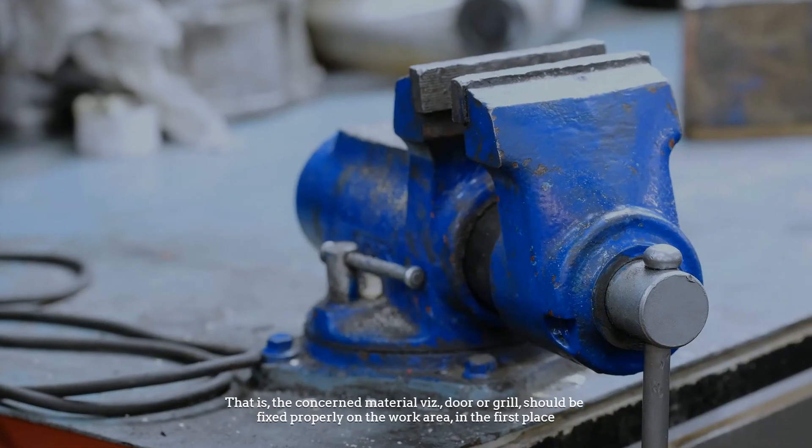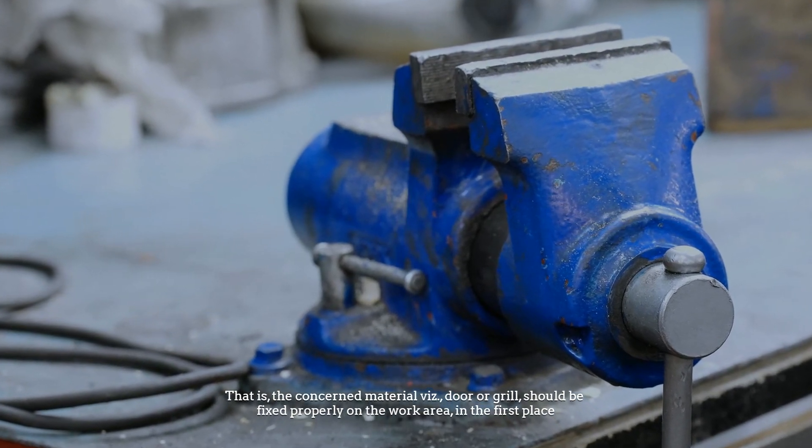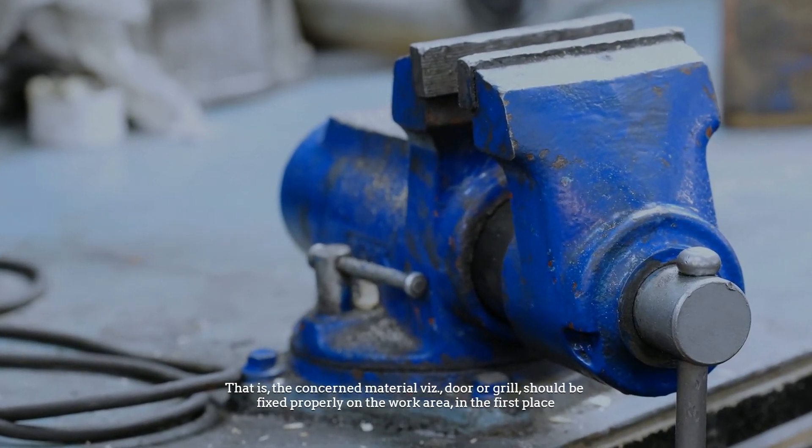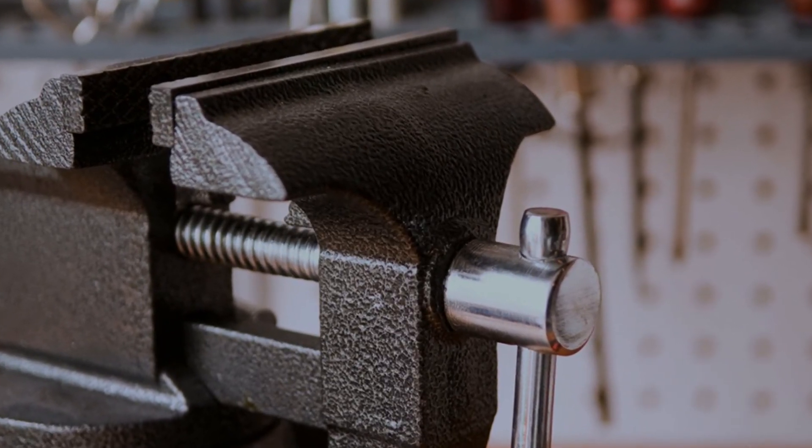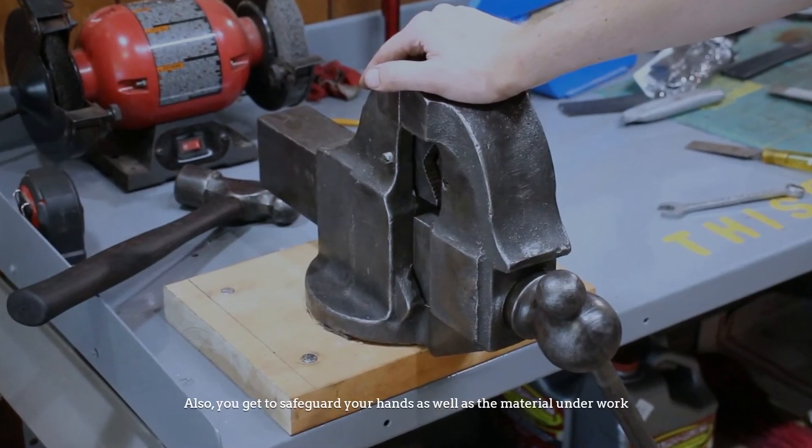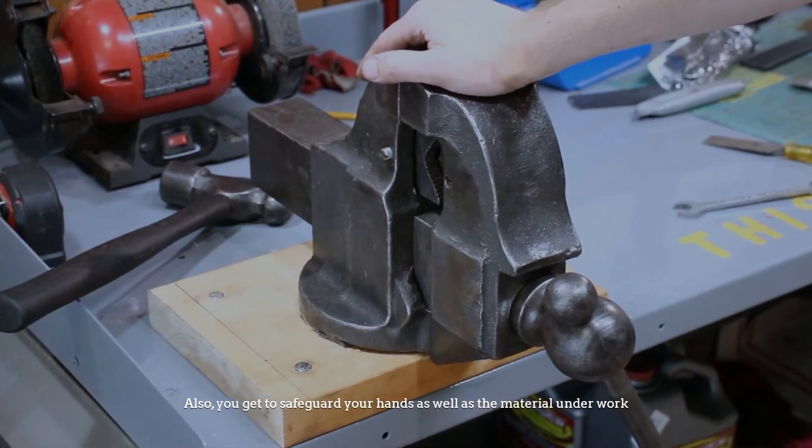That is, the concerned material - door or grill - should be fixed properly on the work area in the first place. Apparently, bench vices are used here too. Also, you get to safeguard your hands as well as the material under work.